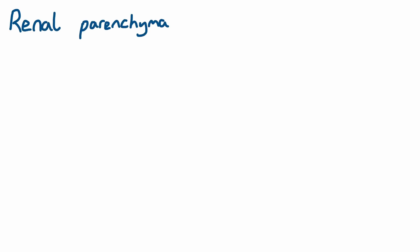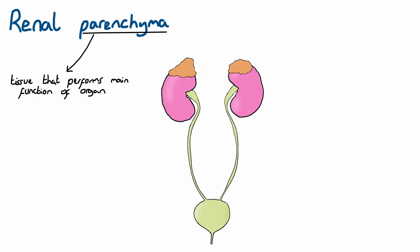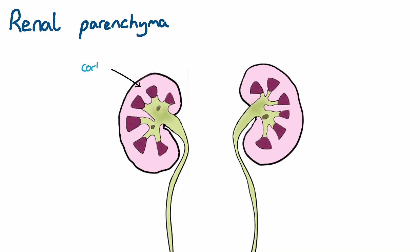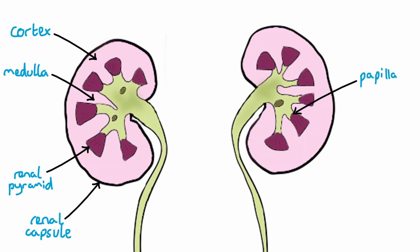Let's look at the anatomy of the renal parenchyma — tissue that performs the main function of an organ. In the kidneys, the outer parenchyma is called the cortex, which is adherent to the renal capsule, and the more internal parenchyma is the medulla. The parenchyma is organised into multiple renal lobules, individual structures made of the outer cortex surrounding a triangular portion of inner medulla known as a renal pyramid. The cortex projects in between renal pyramids to form columns. The tip of each pyramid is called the papilla, where urine drains out of the parenchyma into the minor calyces. Multiple minor calyces combine to form a major calyx, which in turn drains into the renal pelvis.